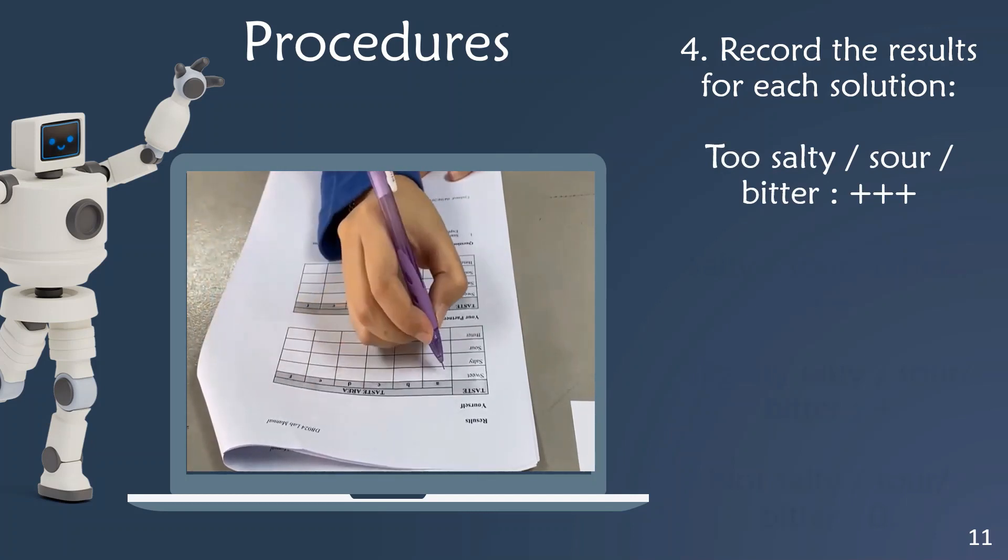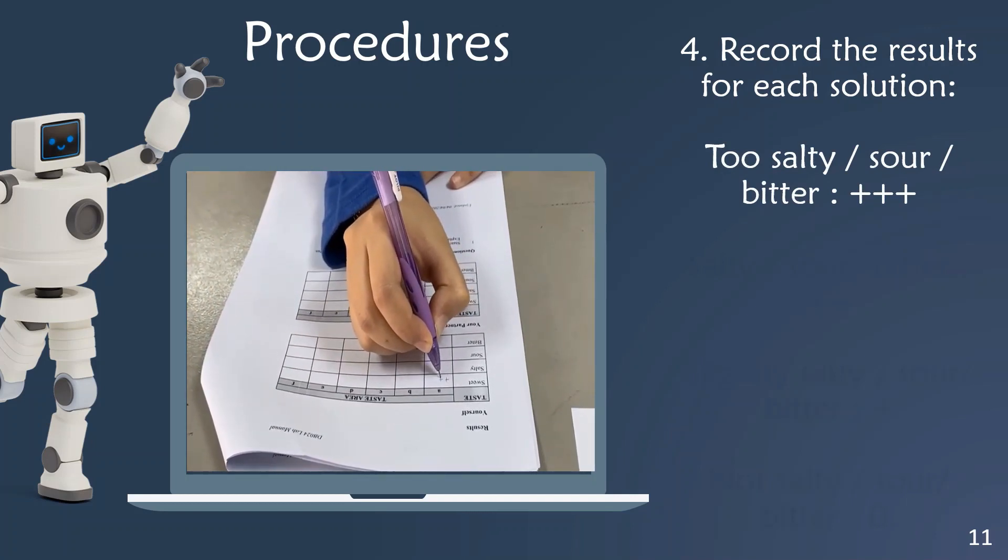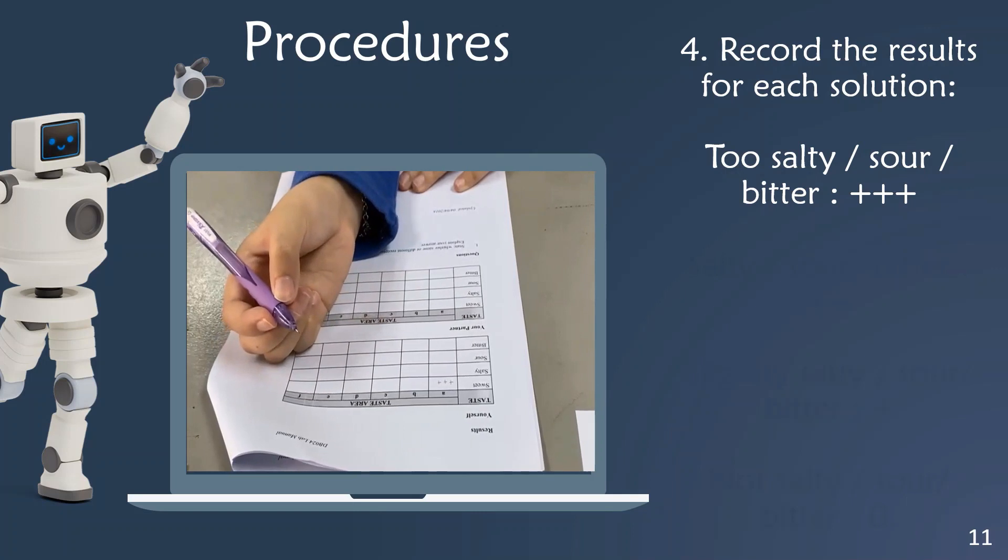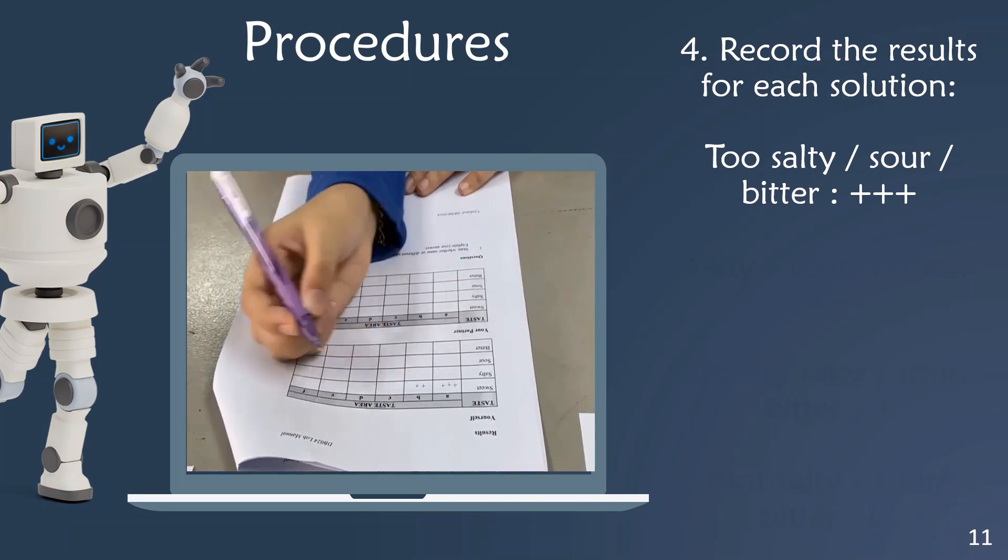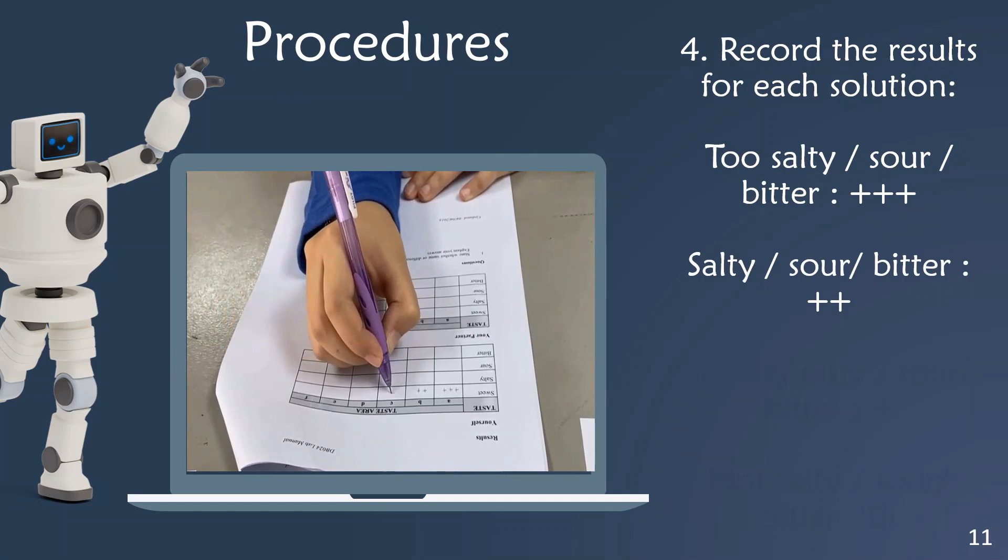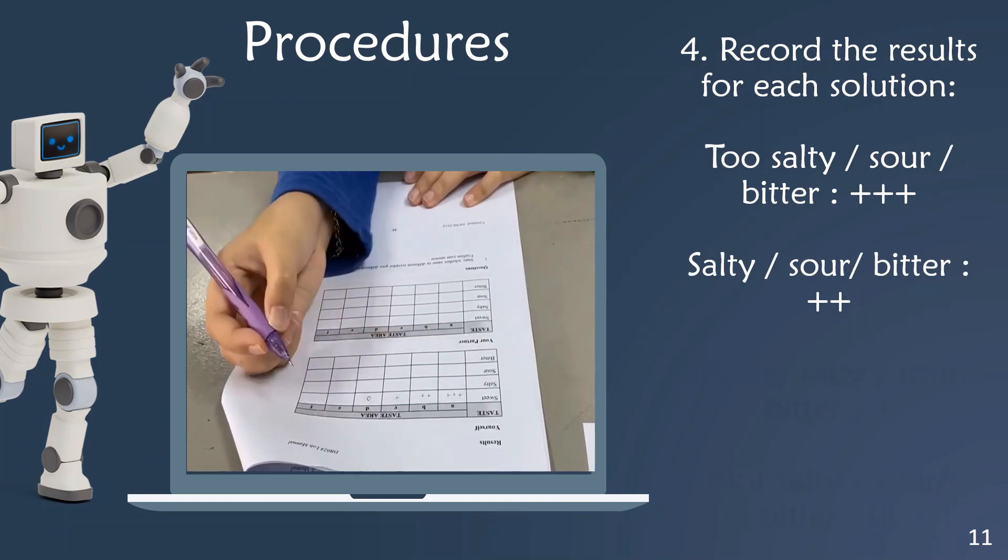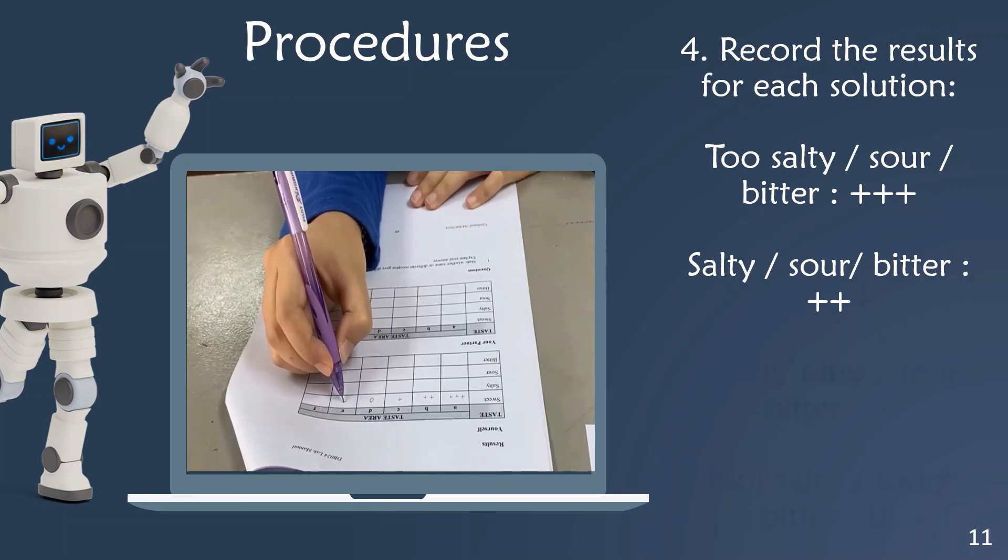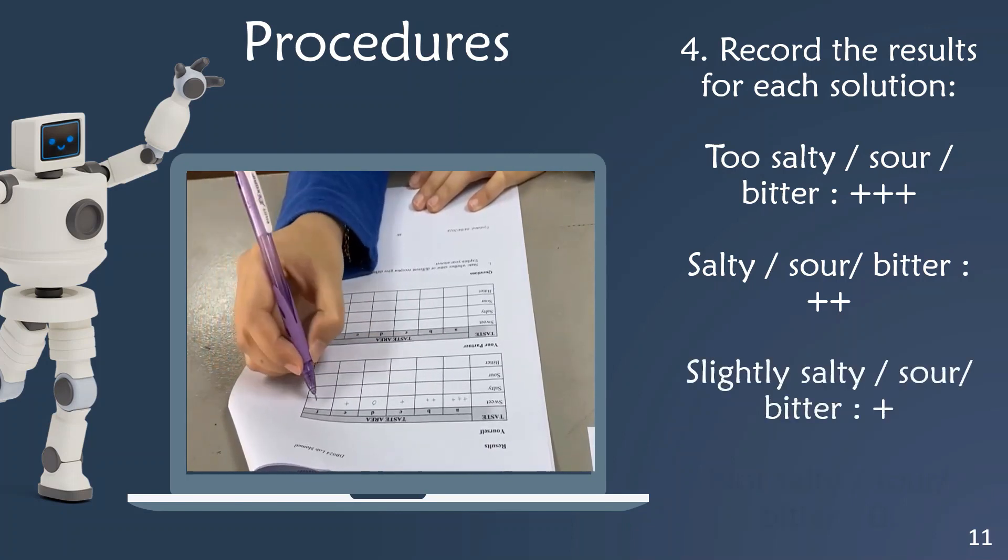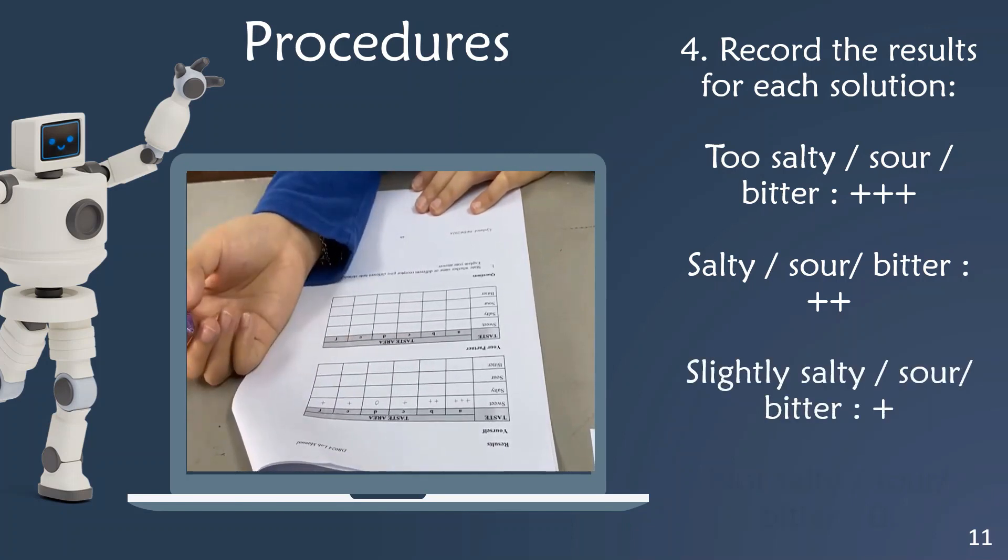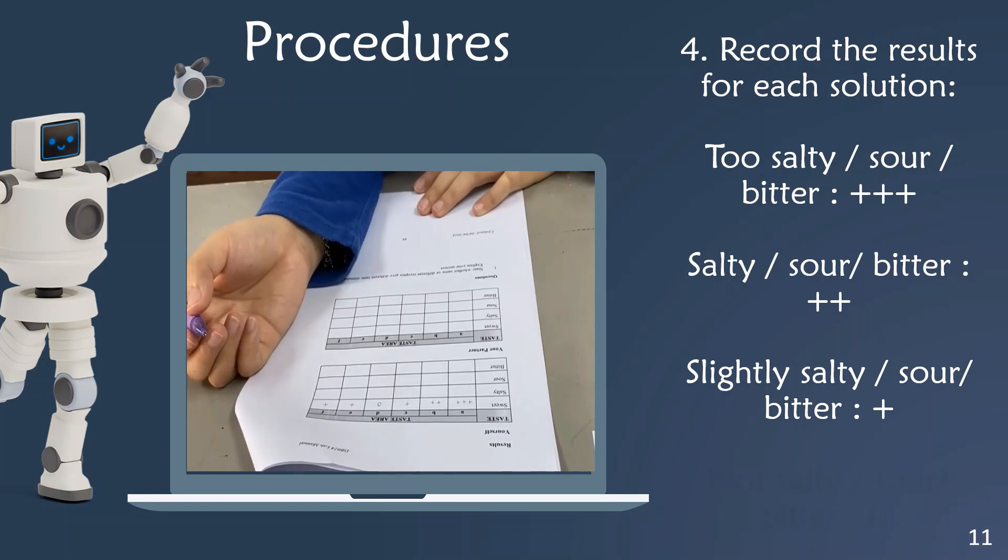If you taste too salty, too sour, or too bitter, put it as 3 plus. If the taste is salty, sour, or bitter, put it as 2 plus. If the taste is slightly salty, slightly sour, or slightly bitter, put it as 1 plus.